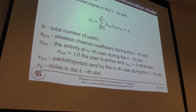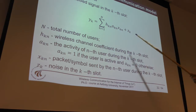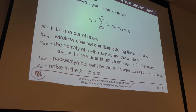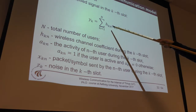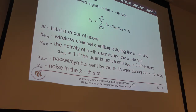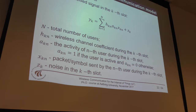We can say that xkn is a single symbol, so zk will be a single noise sample. But we can also say that xkn is a group of symbols making a packet, which means hkn is the same for all symbols and akn is the same for all symbols. In a slotted system, one slot has, say, N symbols, and within the slot the channel of each user is constant — equal to hkn — and the user is either active or inactive.